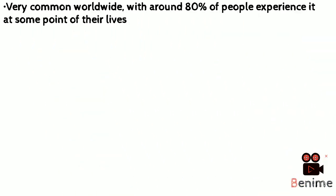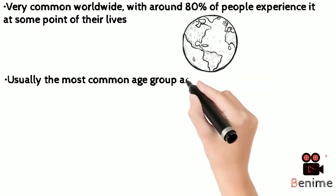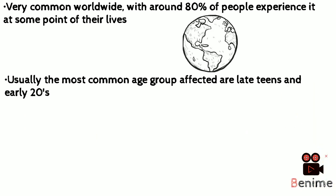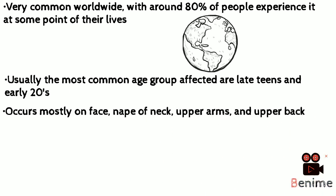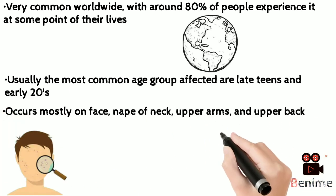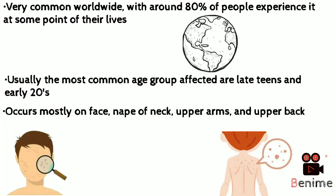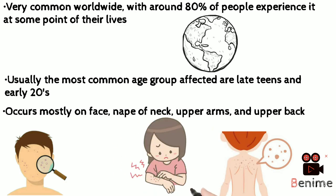Occurrence of acne is extremely common worldwide, with around 80% of people experiencing it at some point in their lives. It can occur at any age, but the age group mostly affected is late teens and early 20s, and it mostly appears on the face, nape of the neck, upper arms, and back.